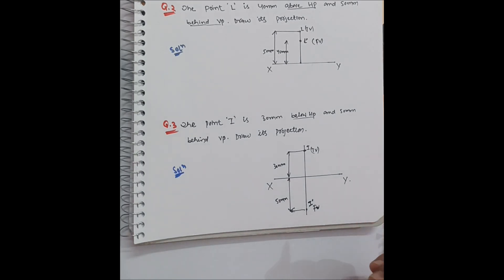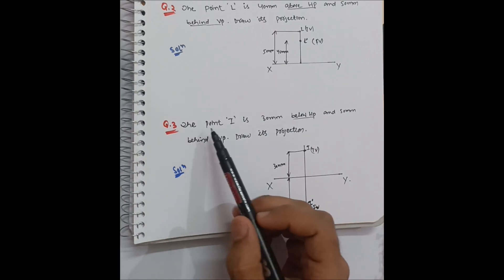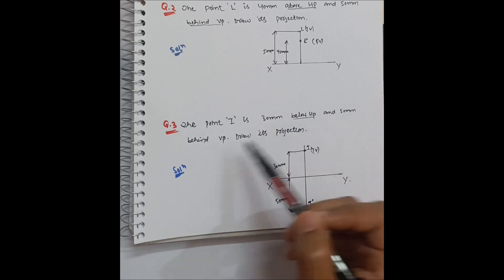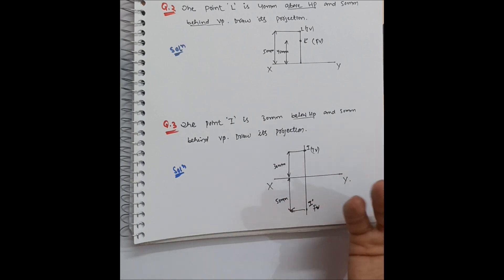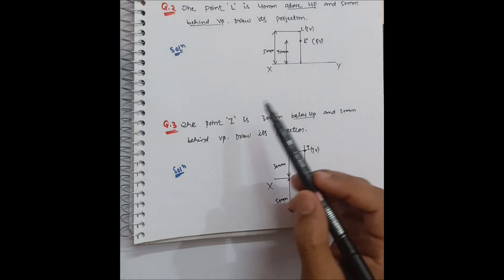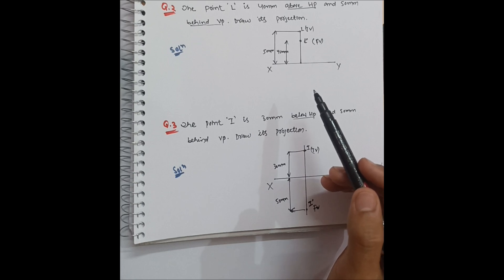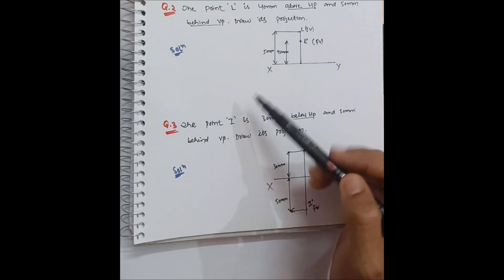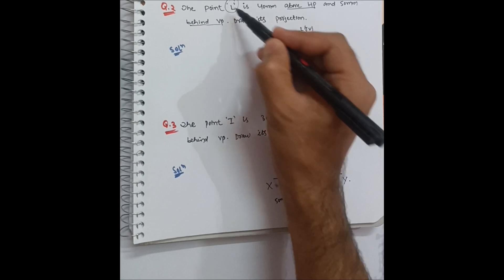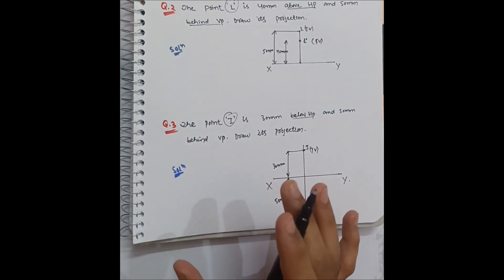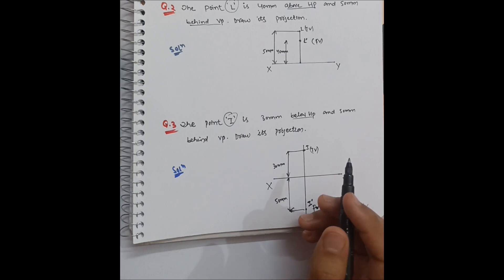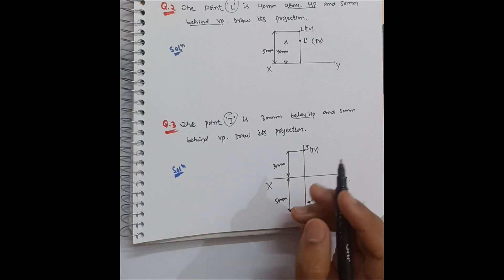I hope you will also try the fourth quadrant problem: Point B is 20mm below HP and 50mm in front of VP — draw its projection. That will be a fourth quadrant question. If you have doubts, ask in the comment section. Note that the points used in these examples — A, L, I — spell 'Ali', my last name! Thanks for watching, please share this video with anyone who needs it, and see you in the next part of this CAD series.